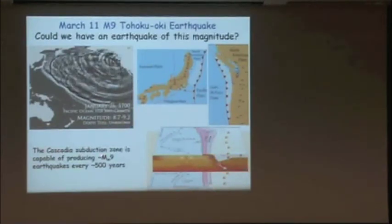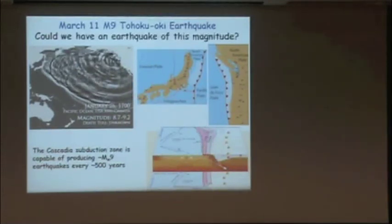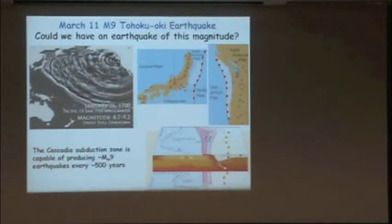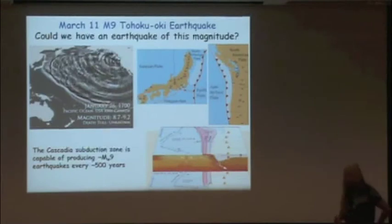The average recurrence interval is about 500 years, but the uncertainty is about 200 years. So a big earthquake like the Japanese one could happen at any time. And we would certainly feel the shaking too — we're not much farther from the Cascadia fault than Tokyo was from the Tohoku earthquake.